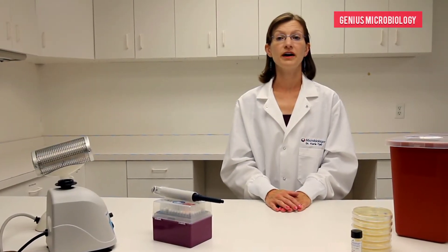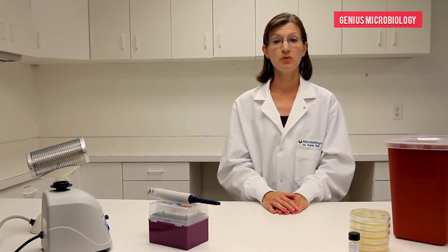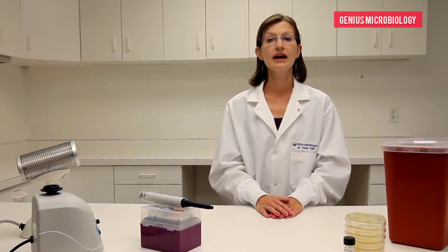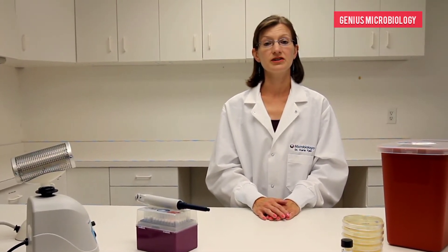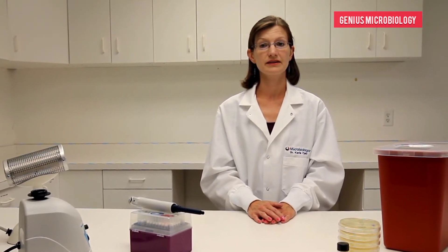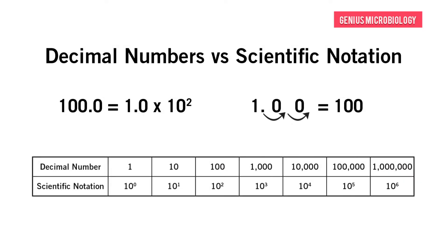Before we can move on to multiple dilutions, it is important to understand decimal numbers and scientific notation. Decimal numbers can be converted to scientific notation by moving the decimal place the same number of places as the exponential number. In this example, if we start with 100 and move the decimal two places to the left, the final result will be 1.0 times 10 to the second.